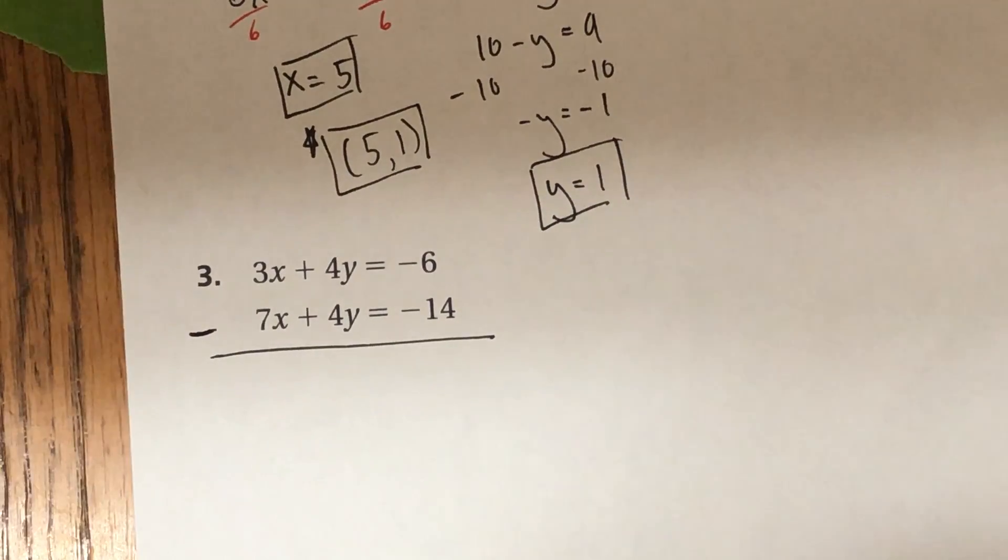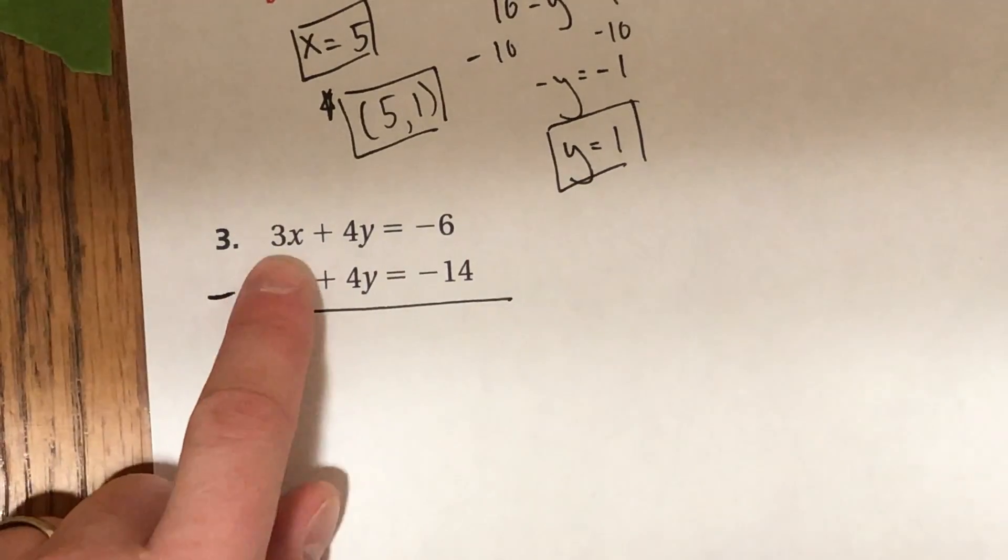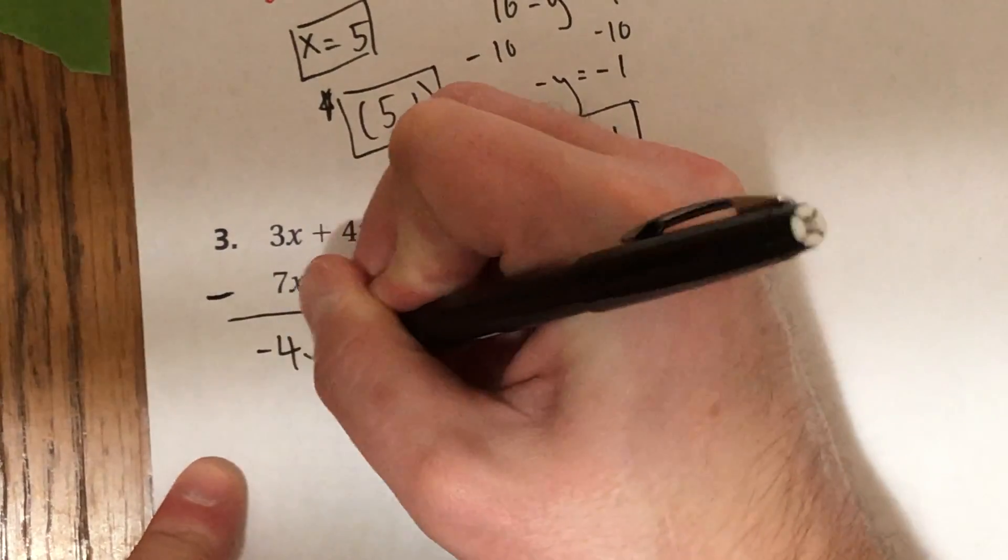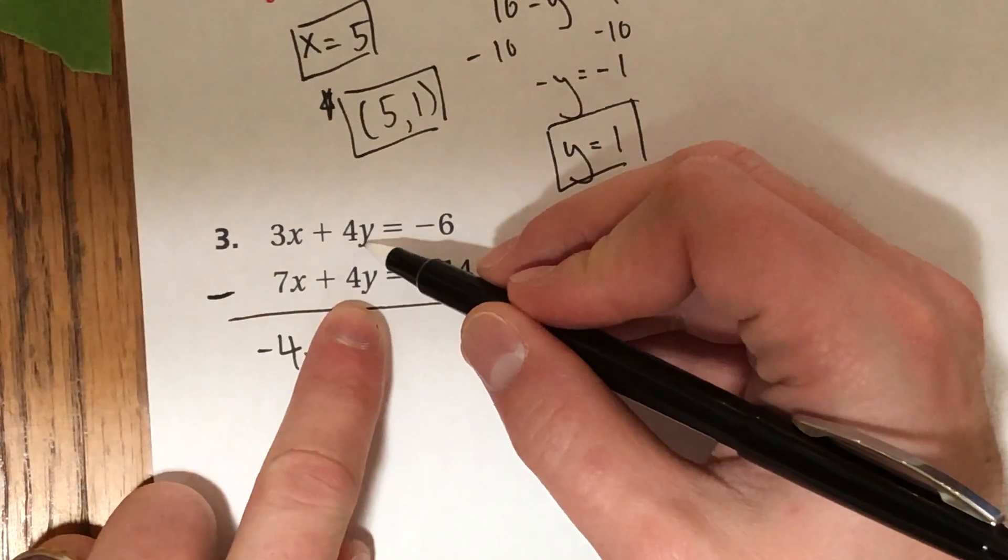And in fact, you know what, team? I'm just feeling extra nice here. We'll go ahead and help you get started here. 3x minus 7x is negative 4x. 4y minus 4y is 0. Cancels out.